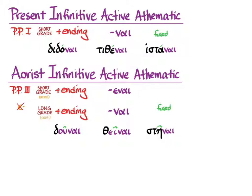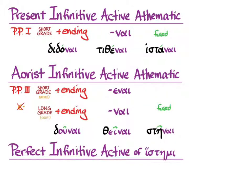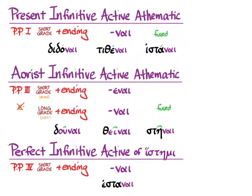Before we leave active infinitives, we have to remember that ἵστημι gives us an unusual perfect infinitive active. Here it's the fourth principal part: the short-grade stem plus the active infinitive ending ναι. From ἕστηκα we take the short-grade stem ἑστα plus ναι. Accent is fixed on the syllable before the ναι, and we get ἑστάναι.